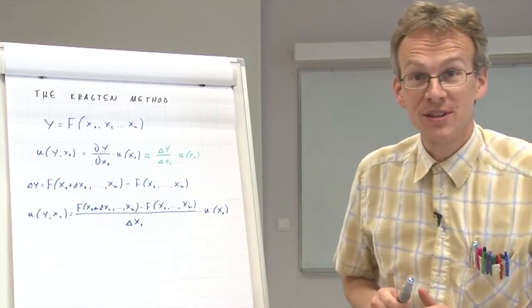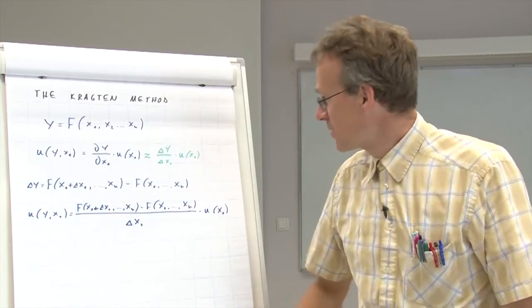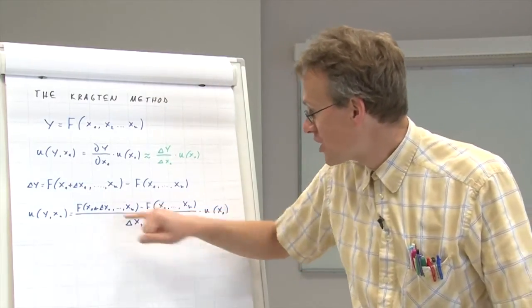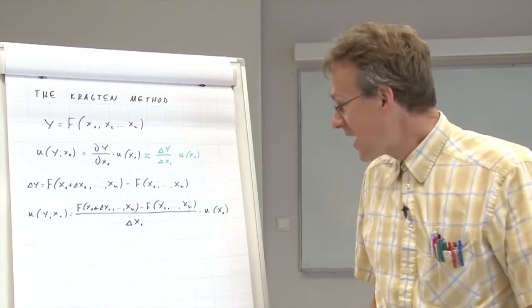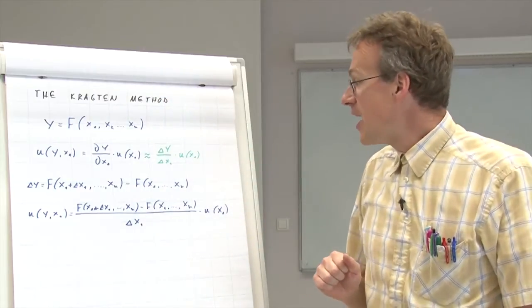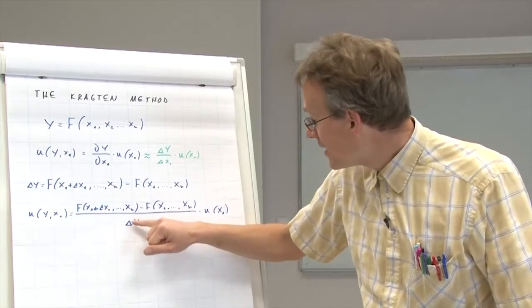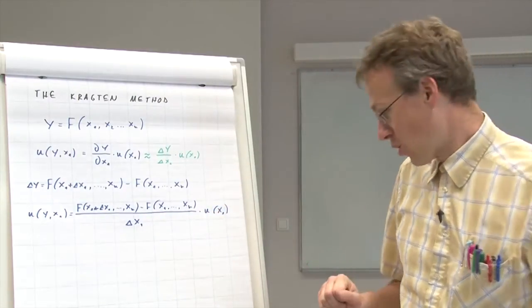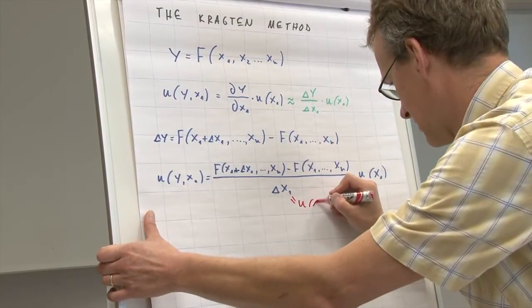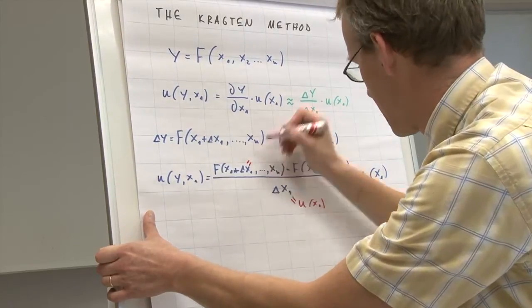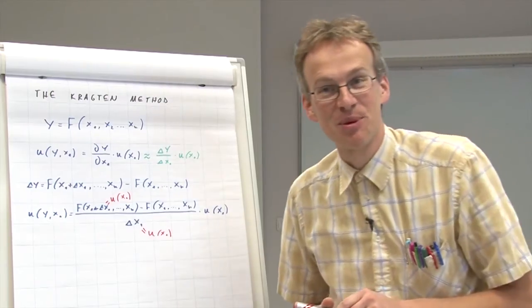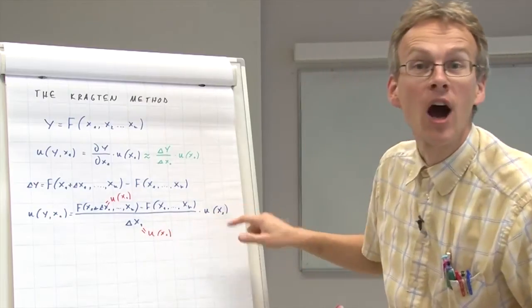An important thing in numerical calculation of partial derivatives is how do we choose which value of delta we use here. What Kragten proposed, and this is why this method carries his name, he proposed that let us take the delta equal to the standard uncertainty of this input quantity.